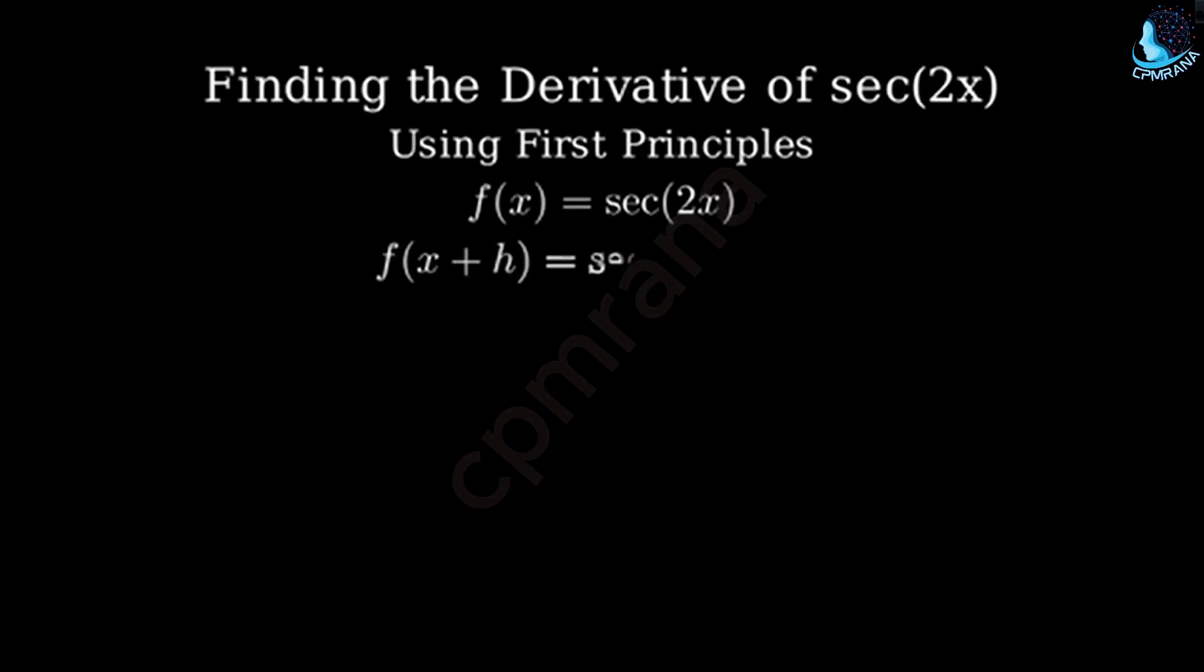f of x plus h equals secant of 2 times x plus h. By definition, the derivative is the limit as h approaches 0 of f of x plus h minus f of x, all divided by h.